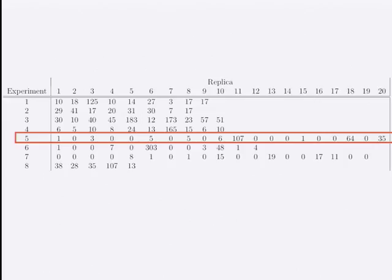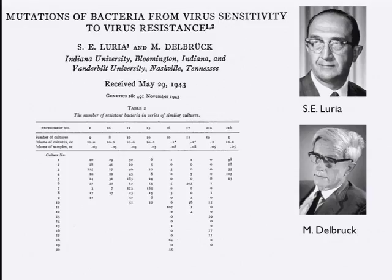There's one person who's already guessed, but I'll ask you. Does anyone know, beside this gentleman who is correct, where this is from? Any of the students know? Luria and Delbruck. So this was a classic experiment done in the 1940s: mutations of bacteria from virus sensitivity to virus resistance.